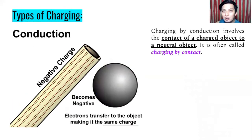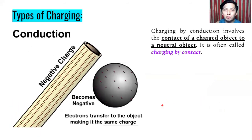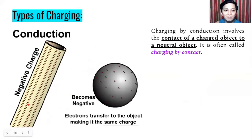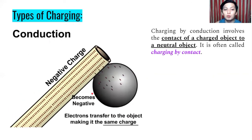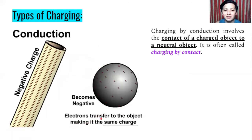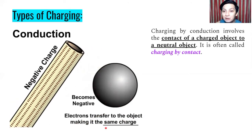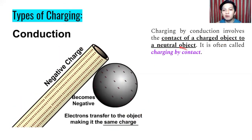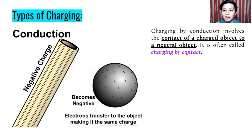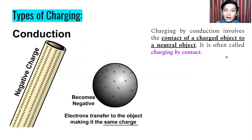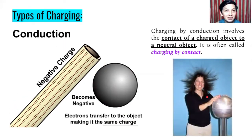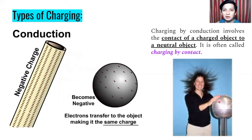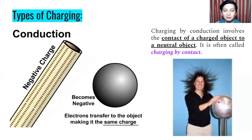And we have conduction. Charging by conduction is when two objects are in contact. So we have negative charge rod over here and then we have a metal ball and when they contacted to each other, the metal ball will also becomes negative. Electron transfer to the object making it the same charge. Charging by conduction involves the contact of a charged object to a neutral object. It is often called as charging by contact. And this is its example. There you go. You're familiar with this, right? And this is because of charging by conduction. That's why your hair will rise up.